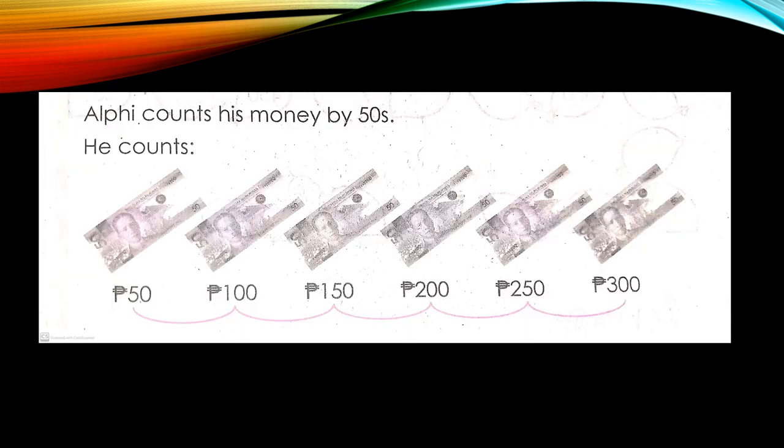Next example: Alfie counts his money by fifties. For example, you have fifty pesos. He counts fifty, one hundred, one hundred fifty, two hundred, two hundred fifty, and three hundred. So in every fifty pesos he started, he adds another fifty. It became one hundred, then one fifty, until he got three hundred.